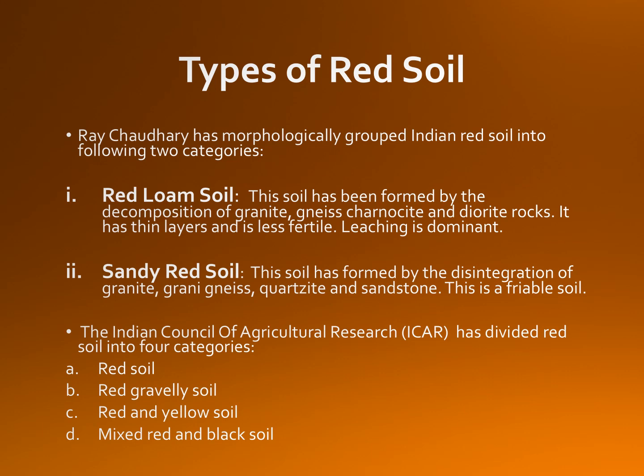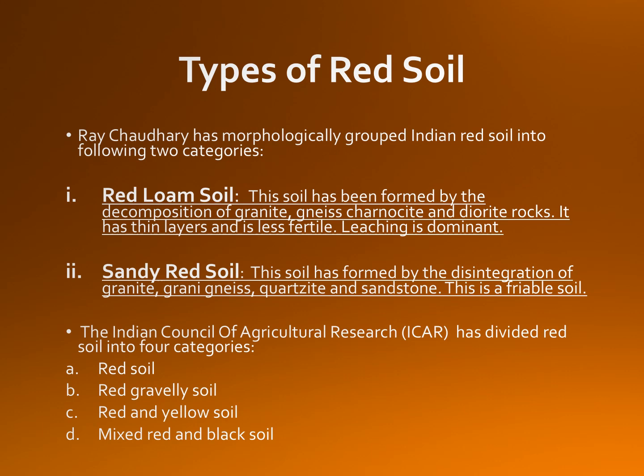Types of red soil: Red Chaudhury in 1941 morphologically grouped Indian red soil into two categories: red loam soil and sandy red soil. Red loam soil has been formed by the decomposition of granite, gneiss, and diorite rocks. It is cloudy, porous, and deficient in concretionary materials. It is poor in nitrogen, phosphorus, and organic materials but rich in potash. Leaching is dominant. This soil has thin layers and is less fertile.